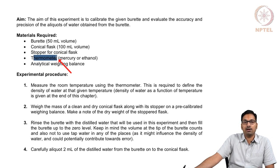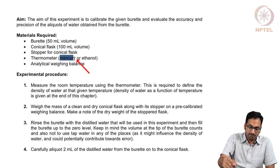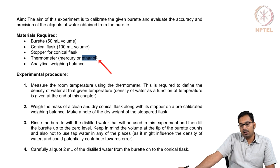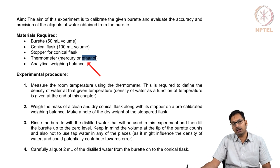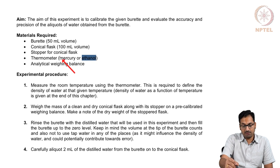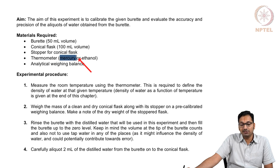A thermometer is needed to note the temperature at which you are making the measurement. One could use a mercury thermometer or an ethanol thermometer — if doing it at room temperature, ethanol is safer because if the thermometer breaks there are no issues. But if experiments are at a much higher temperature, say 80°C, ethanol will not work and you may have to use a mercury thermometer. The judicious choice of apparatus has to be made while setting up the experiment.